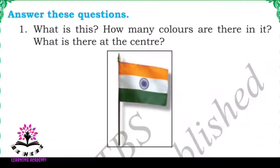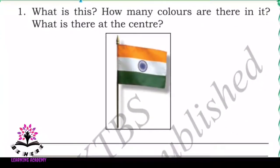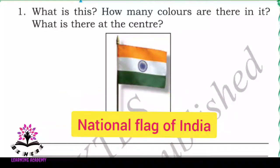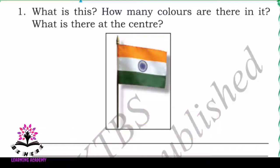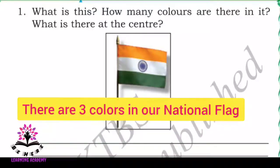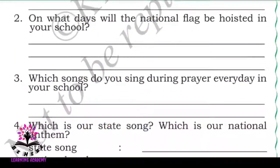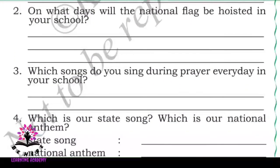Answer these questions: What is this? How many colors are there in it? What is there at the center? This is our national flag. The national flag of India has three colors, and at the center there is an Ashoka Chakra. On what days will the national flag be hoisted in your school?